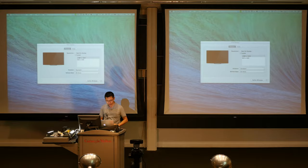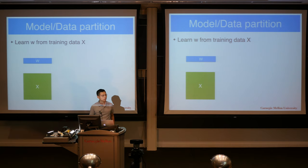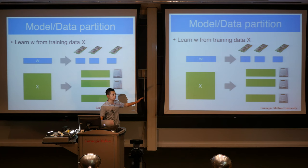Next, let's look at how the parameter server works. The problem is the same — given training data and a model, we want to train. The key difference here is that the model may be very large, so it cannot be stored on a single machine. As shown in yesterday's experiments, we have about 60 billion example features — a huge model that must be partitioned across multiple machines.